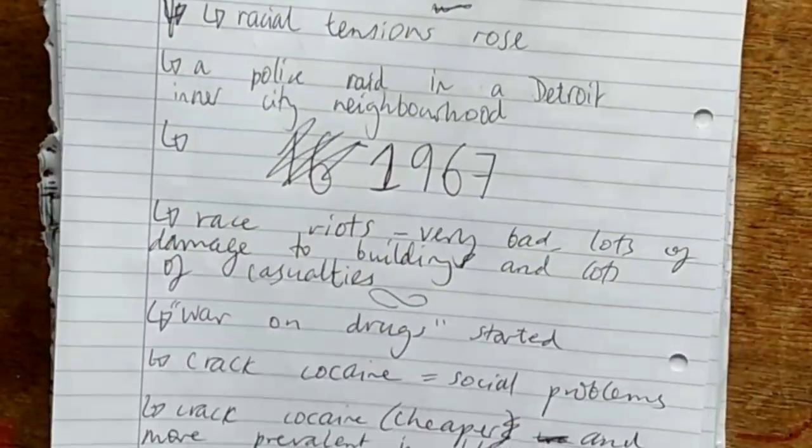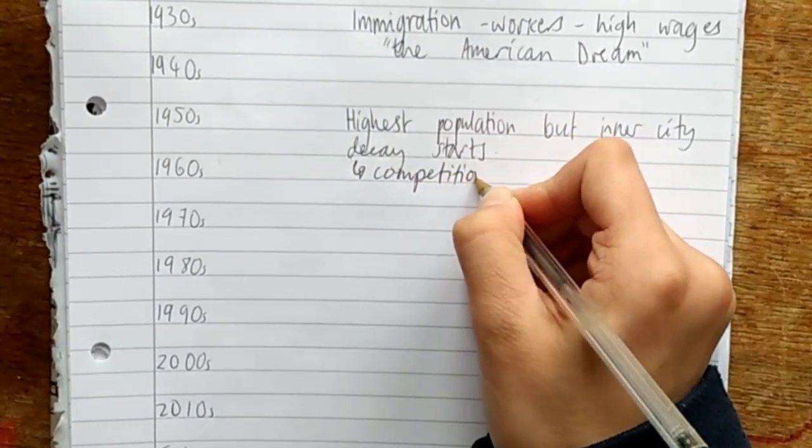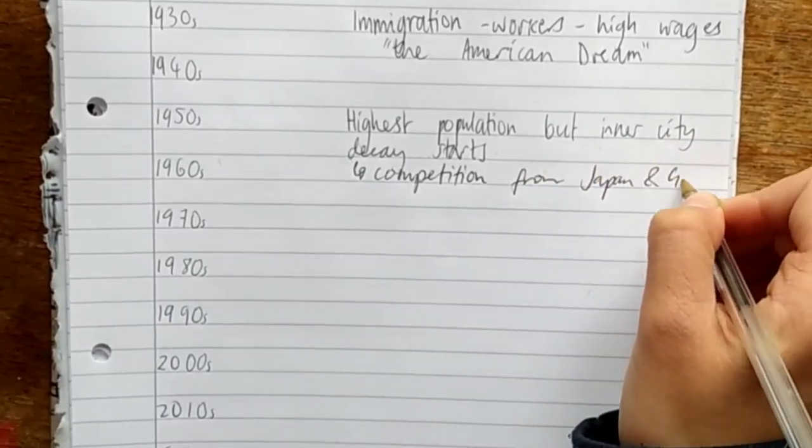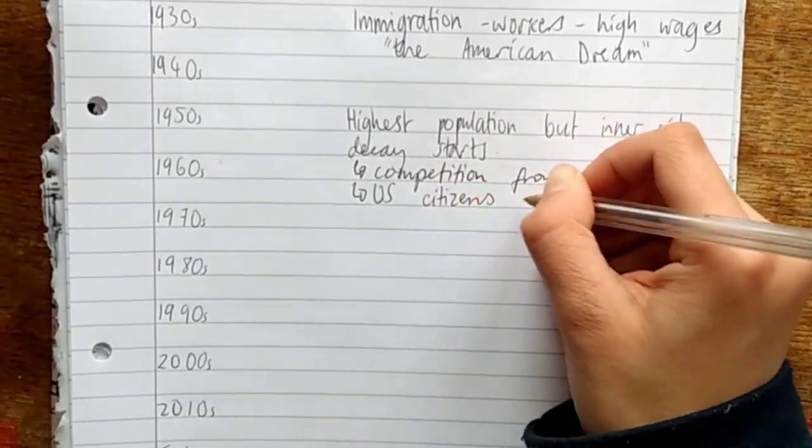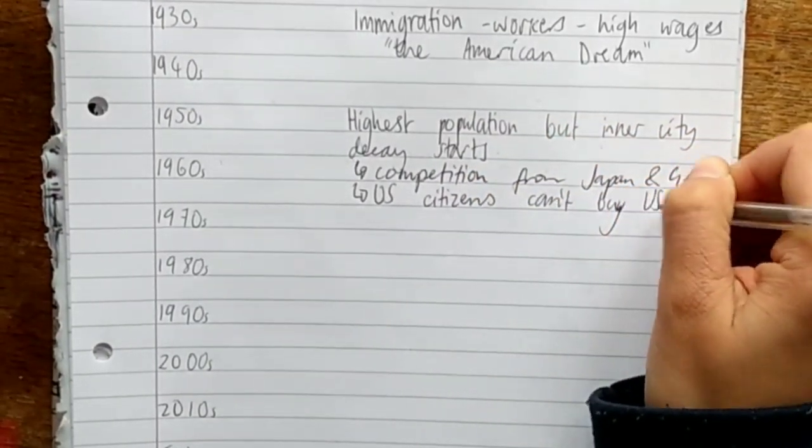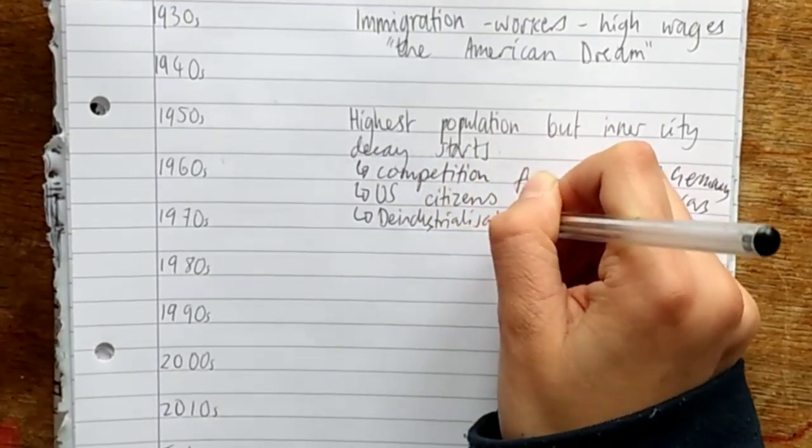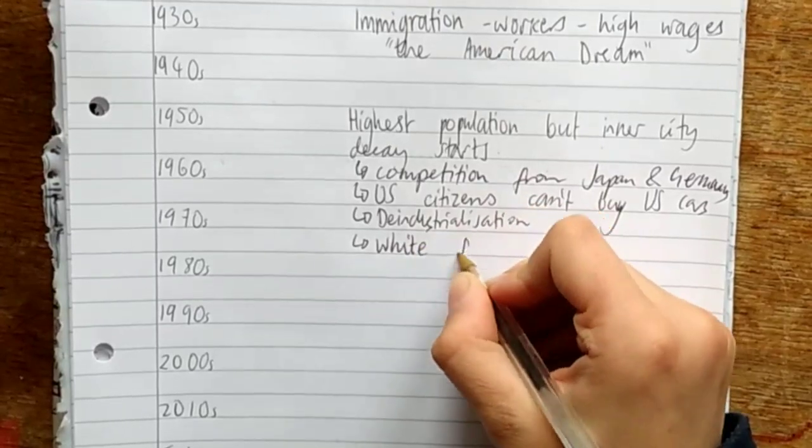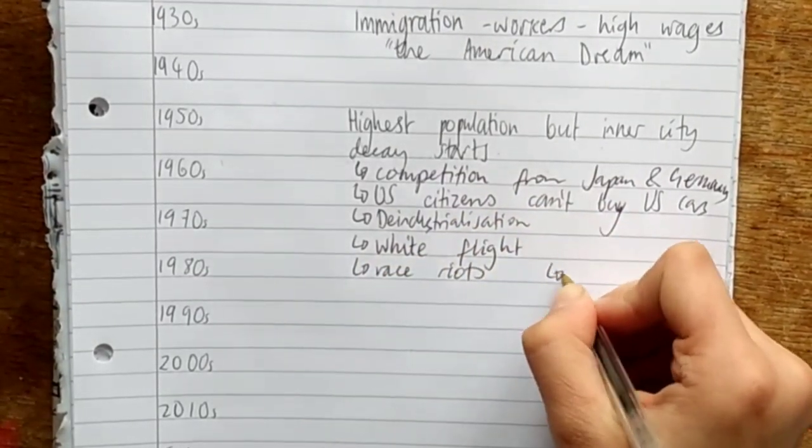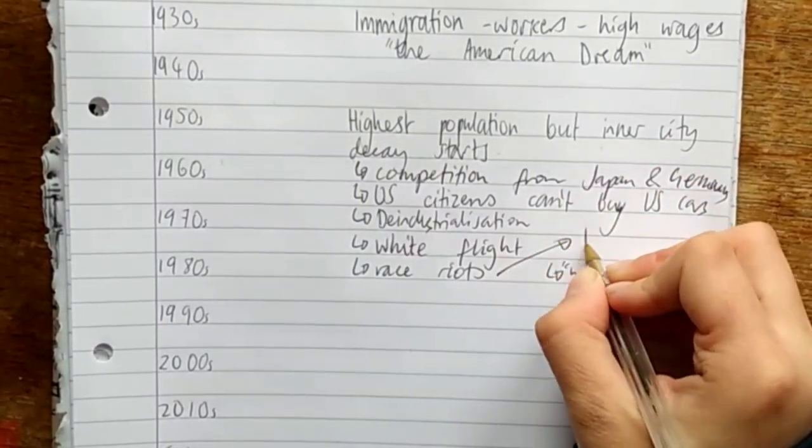Going back to the timeline, I'm just jotting down what we just covered. Competition from Japanese and German car manufacturers, and the fact that US citizens could no longer afford US cars led to deindustrialisation in inner city Detroit. White people migrating out of the area, white flight, also exacerbated this issue and caused the race riots. The war on drugs led to inner city decay even more.